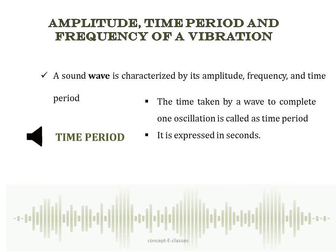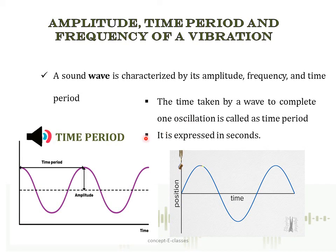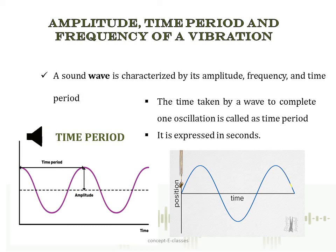The time period of a wave is defined as the time taken by a wave to complete one oscillation. Time period is equal to one divided by frequency. For example, if the frequency of a wave is 10 hertz, then the time taken for one oscillation is 1/10 seconds. Time period is always expressed in seconds.